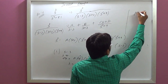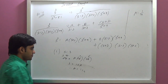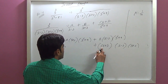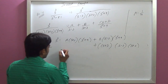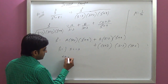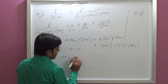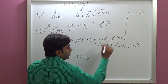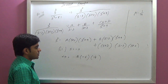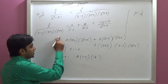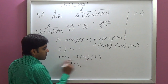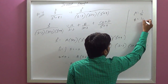A equals 1 by 4. Second, to find B, we put S equal to minus 3. Then we get minus 27 equals B times (minus 6)(18). The minus times minus gives plus, so B also equals 1 by 4.